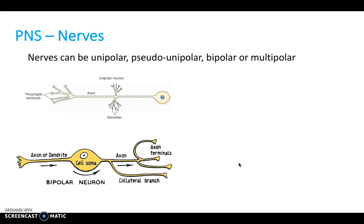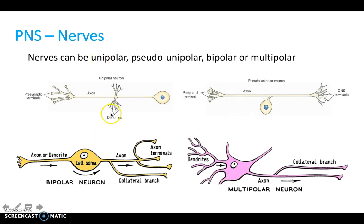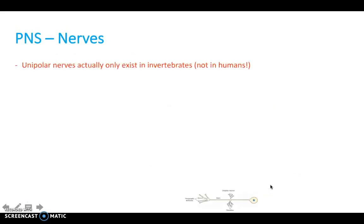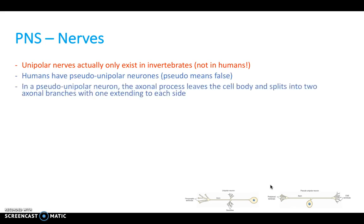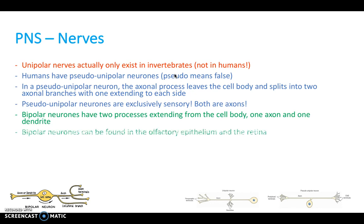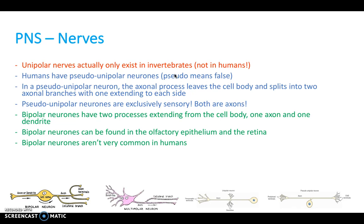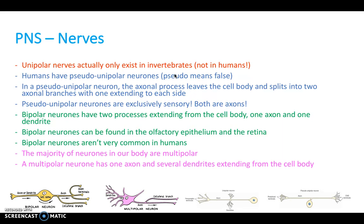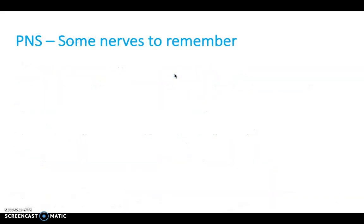Nerves can be unipolar, pseudounipolar, bipolar, or multipolar. Unipolar neurons don't exist in humans, only in invertebrates. Pseudounipolar neurons have the axonal process leaving the cell body and splitting into two axonal branches, and they're exclusively sensory. Bipolar neurons have two processes from the cell body, one axon and one dendrite, and can be found in the olfactory epithelium and retina. Multipolar neurons are the majority of neurons in our body, have one axon and several dendrites, and can be motor or sensory.